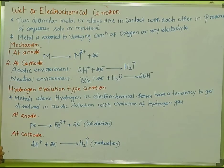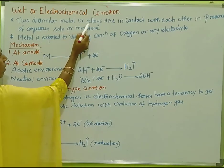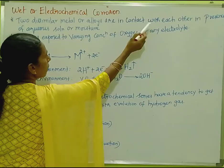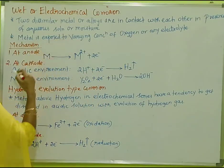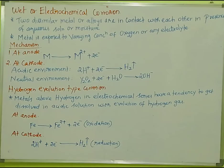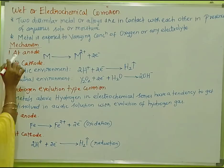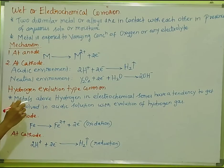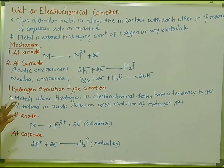When we talk about wet or electrochemical corrosion, two dissimilar metals or alloys are in contact with each other in the presence of an aqueous solution or moisture. Dissimilar means the metals or alloys are of different types. These two dissimilar metals in contact in the presence of moisture — this is wet corrosion.